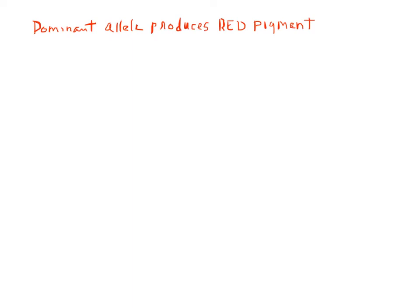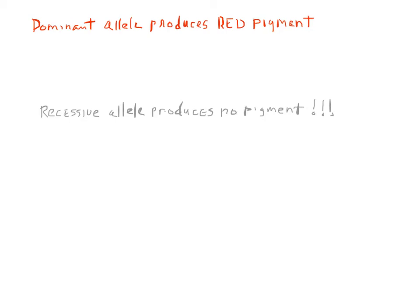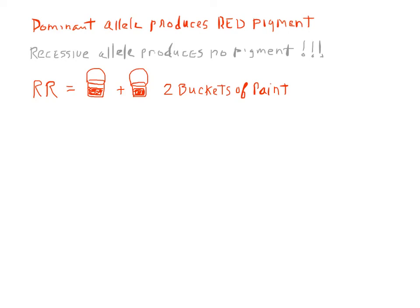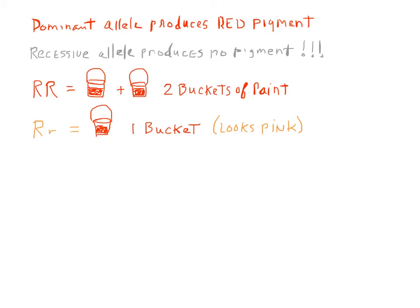To understand what's going on, you need to know that the dominant allele produces red pigment — that's why big R, big R is a red flower. The recessive allele produces no pigment; it doesn't produce white — it's a mutant that produces no pigment. So in a homozygous dominant plant, both alleles are producing pigment, as if you had two buckets of red paint in every cell. In the heterozygous condition, only one allele produces pigment — like having one bucket of paint — so there's not quite enough pigment to go around and the cell looks pink, meaning the flower looks pink.